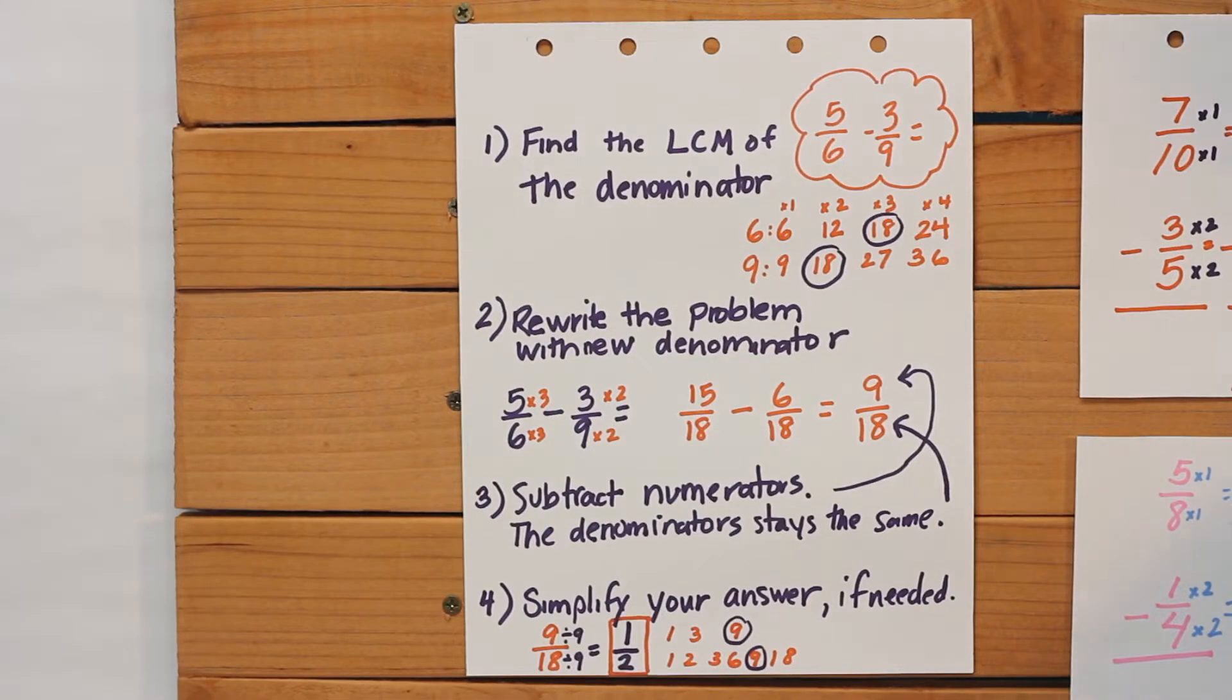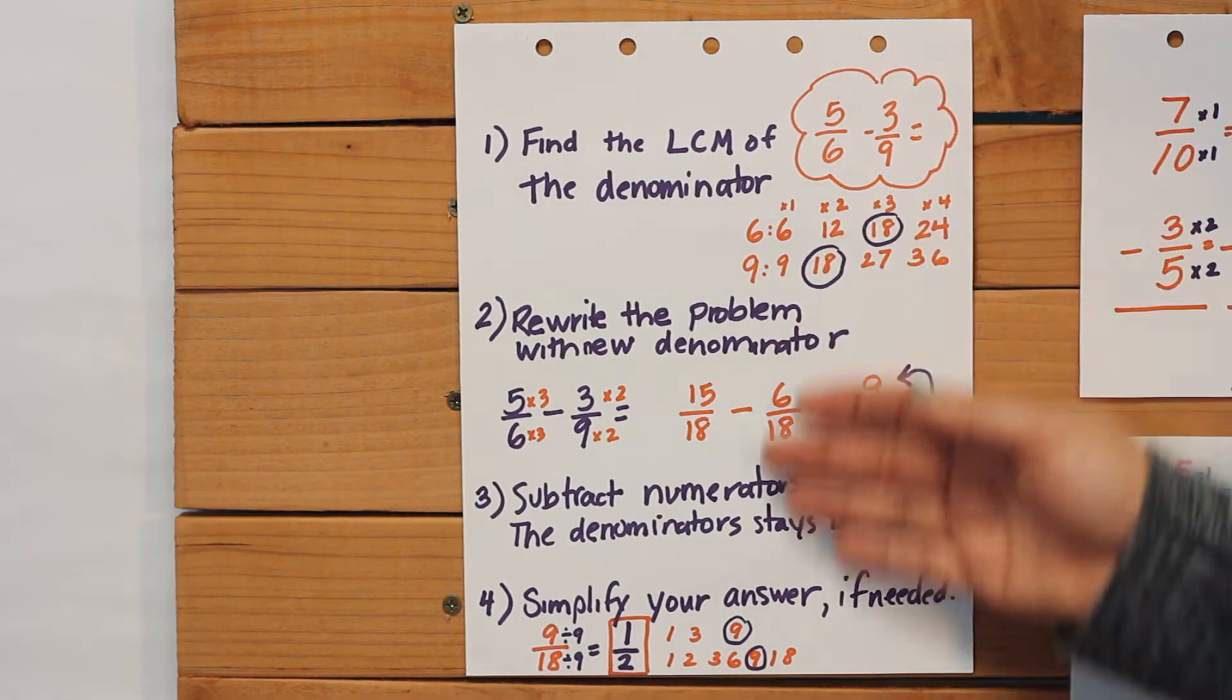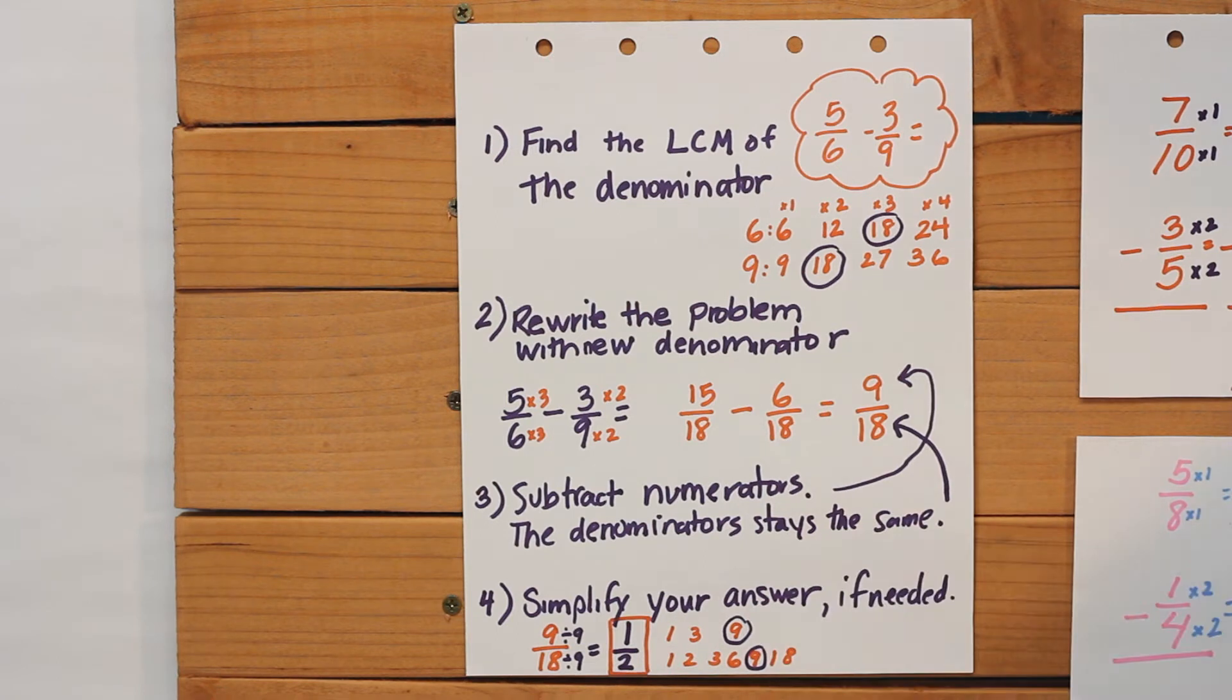Subtracting unlike denominators is going to be very similar to what we did yesterday. We still have to go through all of the different rules to find the least common multiple and to make the denominators the same, but except we're going to be subtracting the numerators today and not adding.